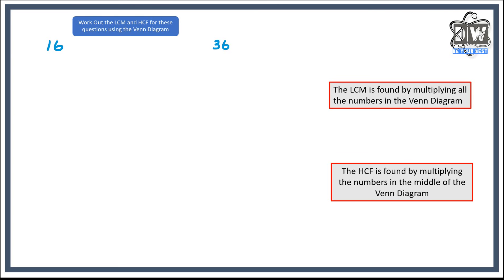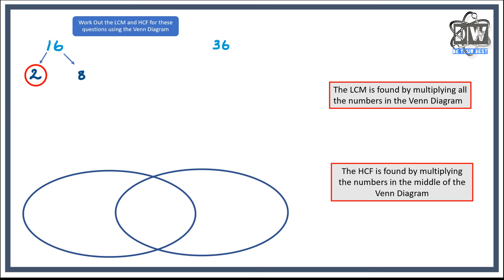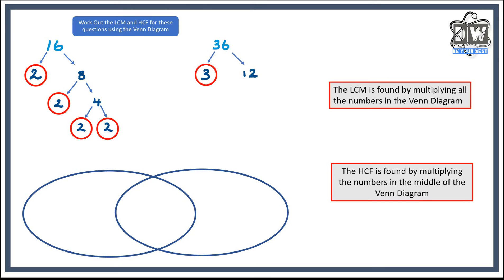Let's go over the prime factor tree of 16. Start with 2 times 8. Now for 8, one factor must be prime: 2 times 4, and then 4 is 2 times 2. So 16 breaks down through repeated halving.